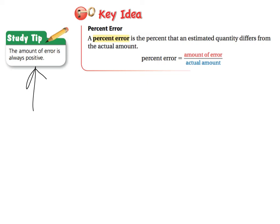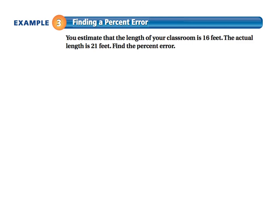So, let's try an example. You're going to take the amount of error divided by the actual amount. Find the percent of error. You estimate the length of the classroom is 16 feet, but the actual length is 21 feet. So, you're way off. But, if you actually estimated it at 16 feet, you were off by 5. We subtract them. So, the amount of error was 5 feet. 5 feet divided by the actual amount, which is 21, not the original amount, the actual amount. As a decimal, that gives you approximately 0.238, which gives you approximately 23.8% error.